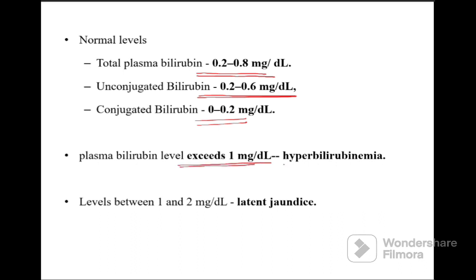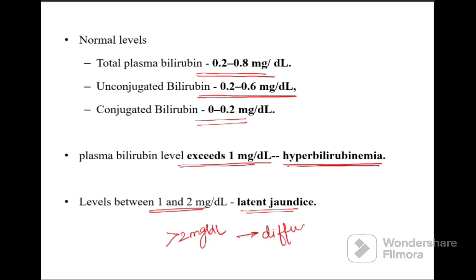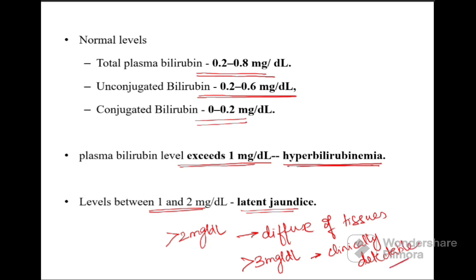When the plasma bilirubin level is more than 1 mg/dL it is called hyperbilirubinemia. When levels are between 1 to 2 mg/dL it is called latent jaundice. When it is more than 2 mg/dL it diffuses into the tissues and there will be discoloration of the eyes and sclera. When it is more than 3 mg/dL, jaundice is clinically detectable.